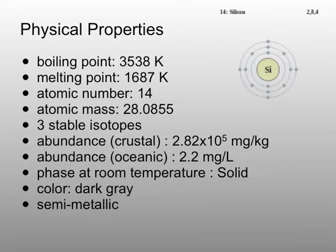There are three stable isotopes. You can see the crust and oceanic abundance. Its phase at room temperature is solid. The color is dark gray, and it's semi-metallic.